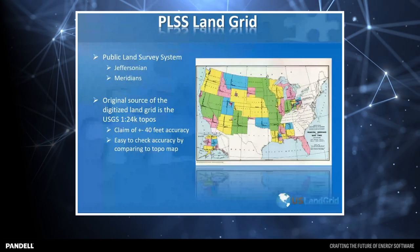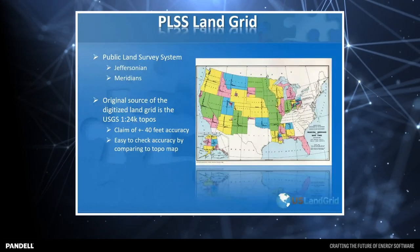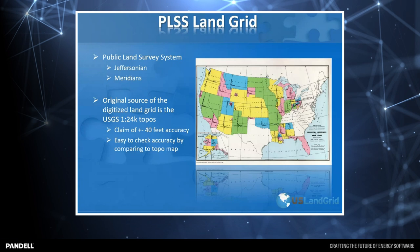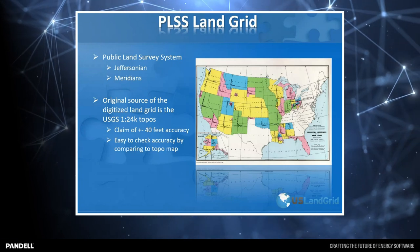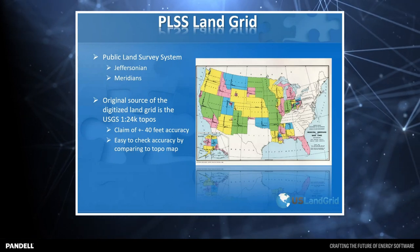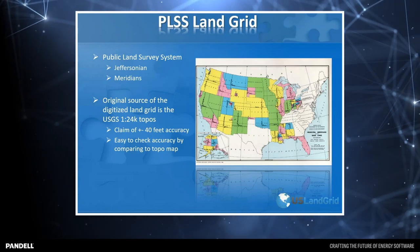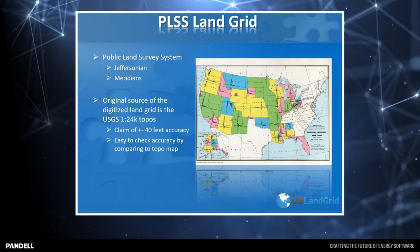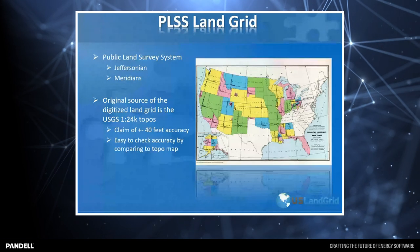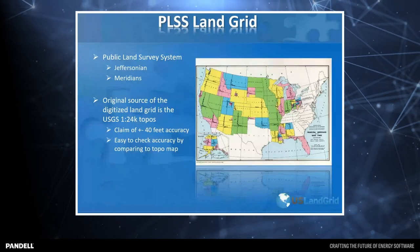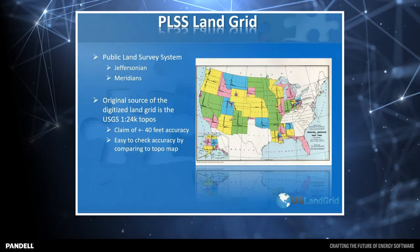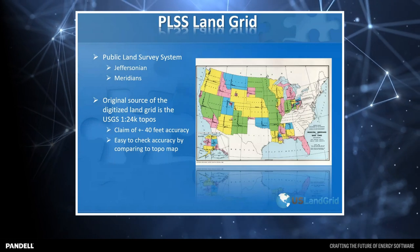The original source of the land grid we use today — the digitized land grid — is sourced or digitized from the USGS 1-to-24K topos, the United States Geological Survey topographic maps. Those topos have an accuracy of plus or minus 40 feet, which means your land grid has an accuracy in the PLSS states of plus or minus 40 feet. A great way to check the integrity of your land grid is to bring in a topo map and see how it matches up.